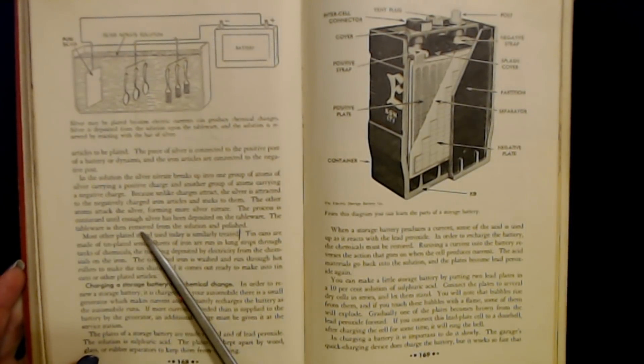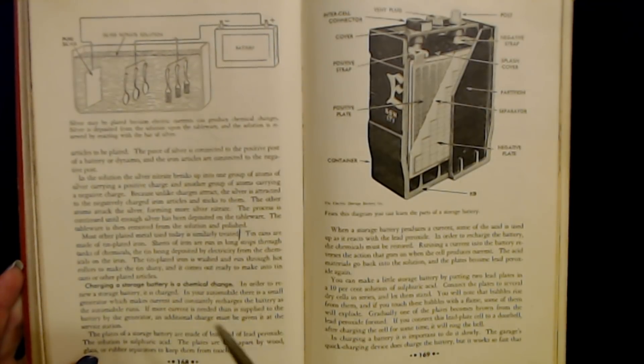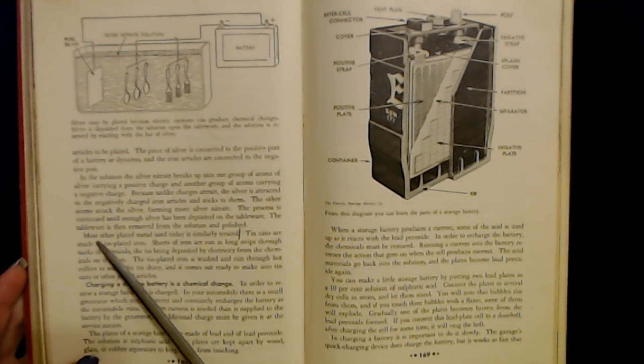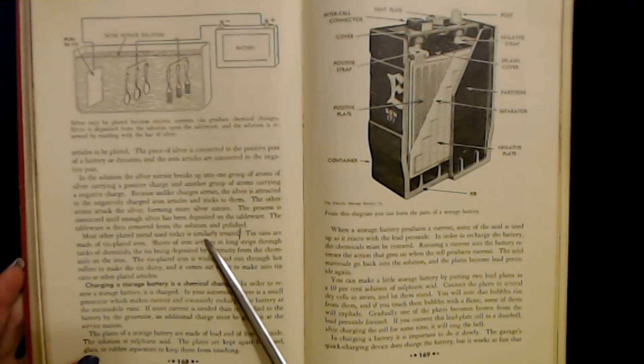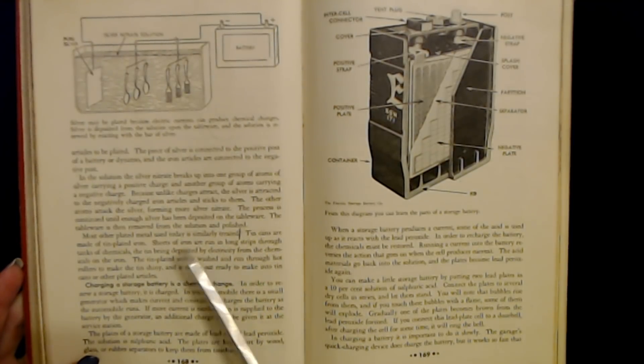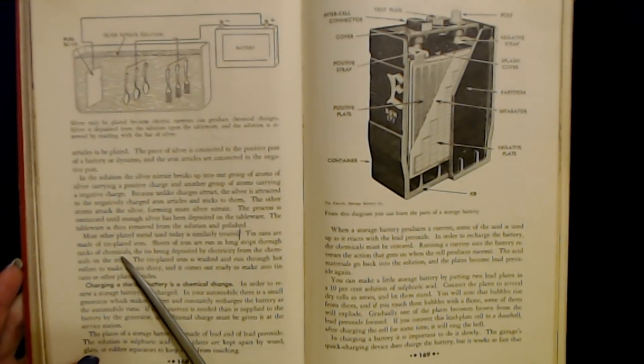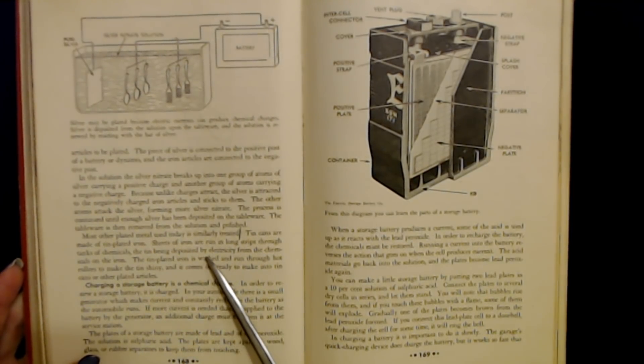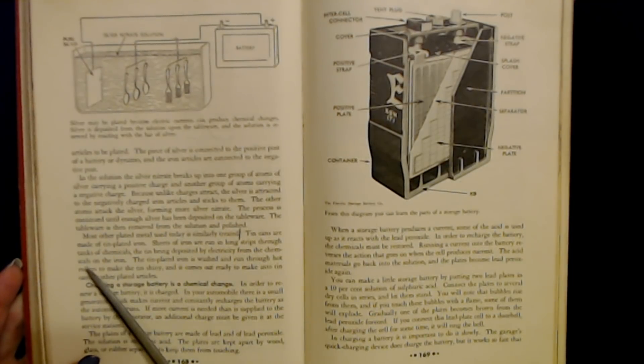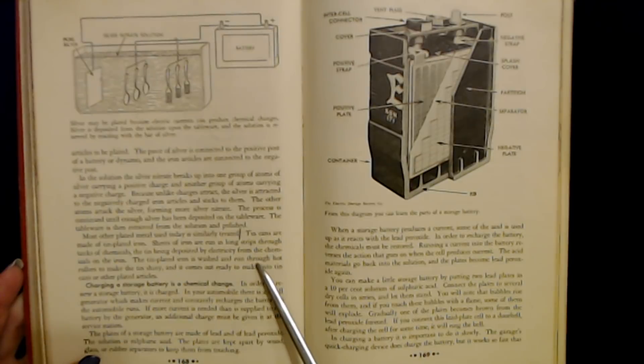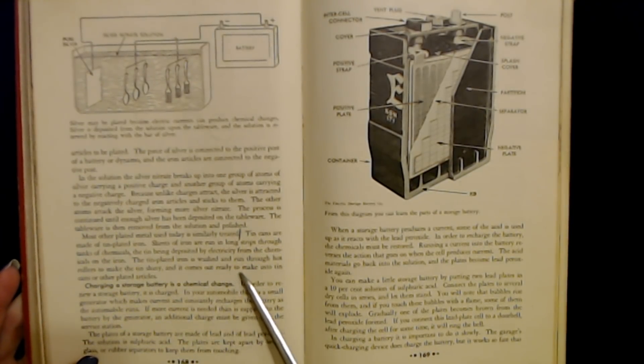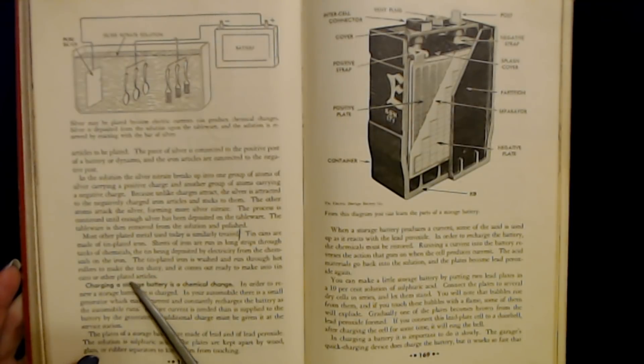Most other plated metal used today is similarly treated. Tin cans are made of tin plated iron. Sheets of iron are run in long strips through tanks of chemicals, the tin being deposited by electricity from the chemicals on the iron. The tin plated iron is washed and run through hot rollers to make the tin shiny and it comes out ready to make into tin cans or other plated articles.